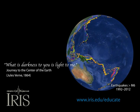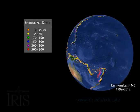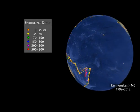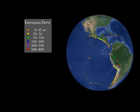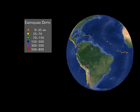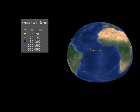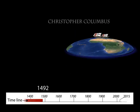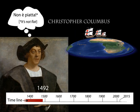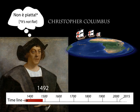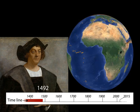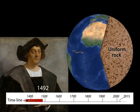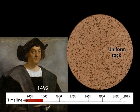Much of our knowledge of Earth's insides comes from monitoring the thousands of earthquakes that occur every year. Five centuries ago, the world had mostly accepted that the Earth was not only a sphere, but was thought to be of uniform rock throughout.